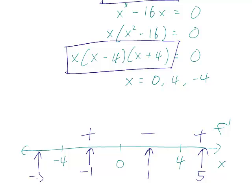If we plug in minus 5, we have minus 5 for the x, that's negative, times minus 5 minus 4 minus 9, that's negative, times minus 5 plus 4, that's also negative. Three negatives gives you a negative.